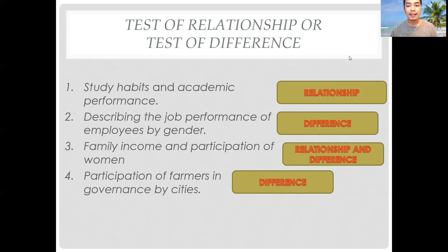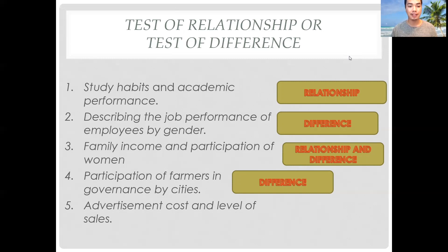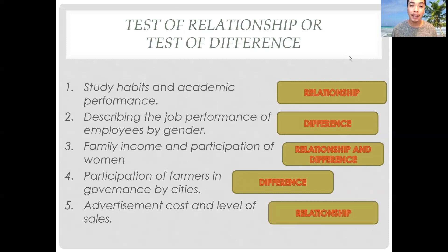The last example is advertisement cost and level of sales. The answer is test of relationship, since we are determining whether the advertisement cost of the company has something to do with the achieved level of sales. Now that we are comfortable identifying whether a test should be a test of relationship or a test of difference, let us proceed to the specific statistical treatment we can use in each test.